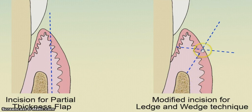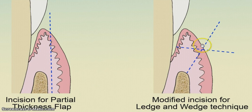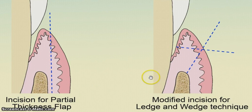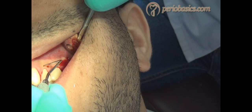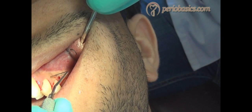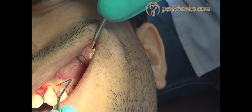This incision is called the modified incision for the ledge wedge technique. The ledge wedge technique is used for elimination of gingival enlargement on the palatal aspects of the molars. It includes two incisions which remove the enlarged gingiva, and the margins of the gingiva are again adapted to the tooth surface.